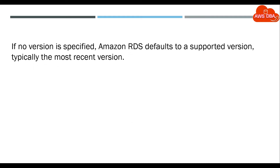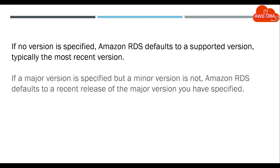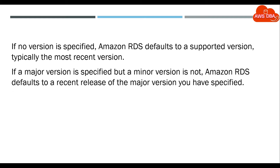If no version is specified, Amazon RDS defaults to a supported version, typically the most recent version. If a major version is specified but a minor version is not, Amazon RDS defaults to a recent release of the major version you have specified.